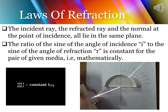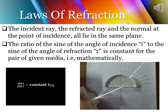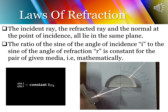Now let us discuss the two laws of refraction. Just as we had two laws of reflection, we have two laws of refraction. The first law of refraction states that the incident ray, the refracted ray, and the normal at the point of incidence all lie in the same plane. This is similar to the second law of reflection, with only the change that the reflected ray is replaced by the refracted ray.